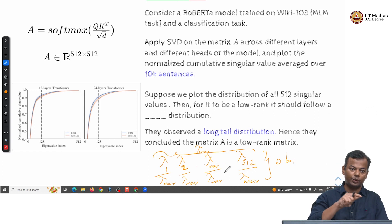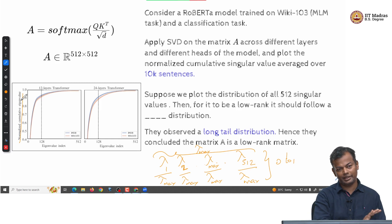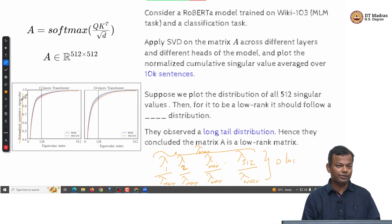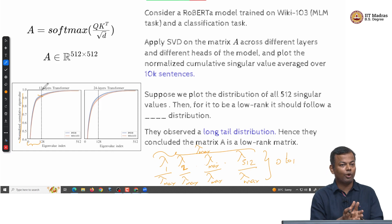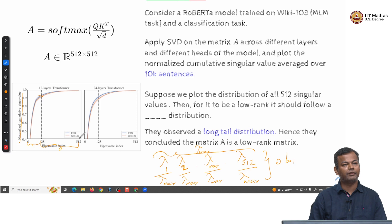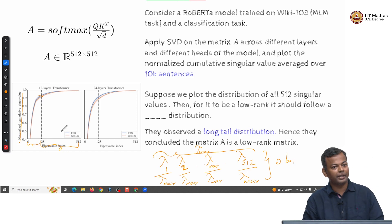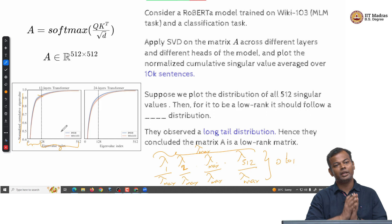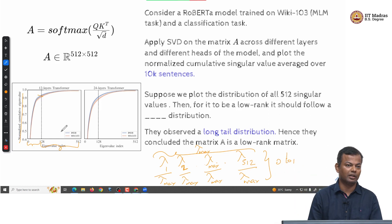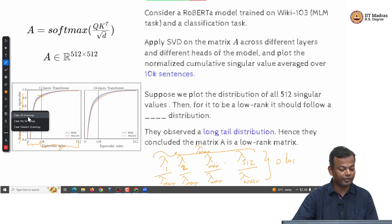If you look at the plot, the initial 128 eigenvalues already account for around 0.9 or more of the cumulative sum. That means those 128 are contributing to 90 percent of the sum, and the remaining 384 eigenvalues are contributing very little. This is sort of an empirical proof that the attention matrix is actually a low rank matrix.